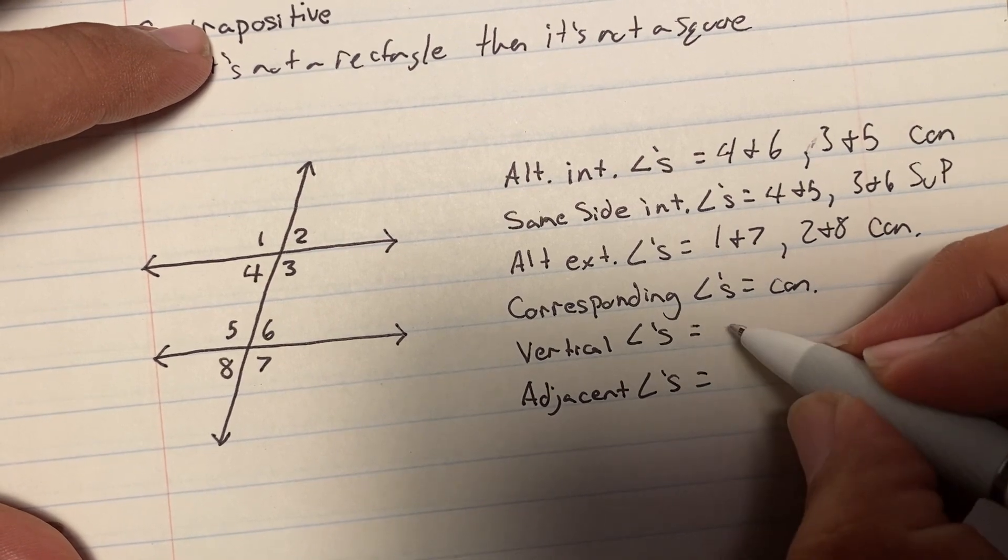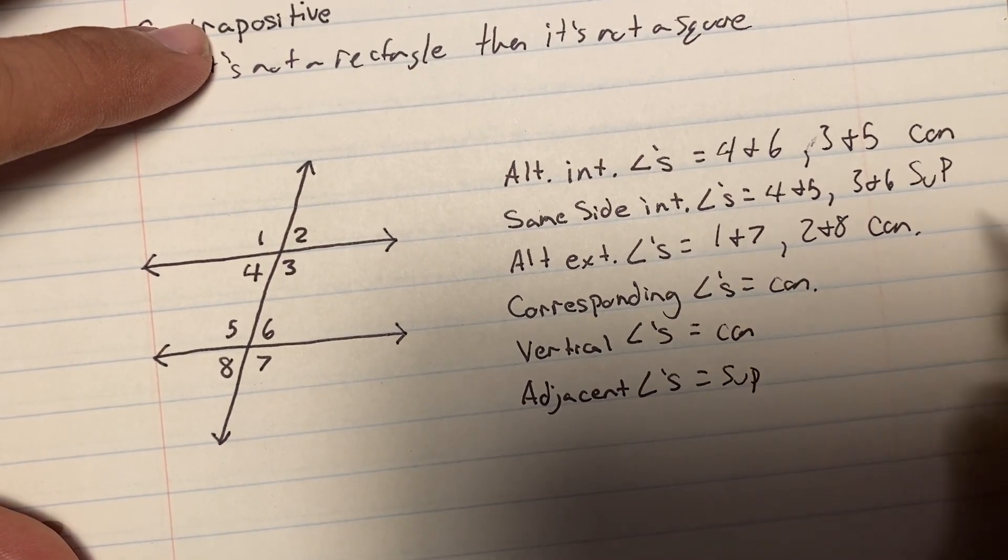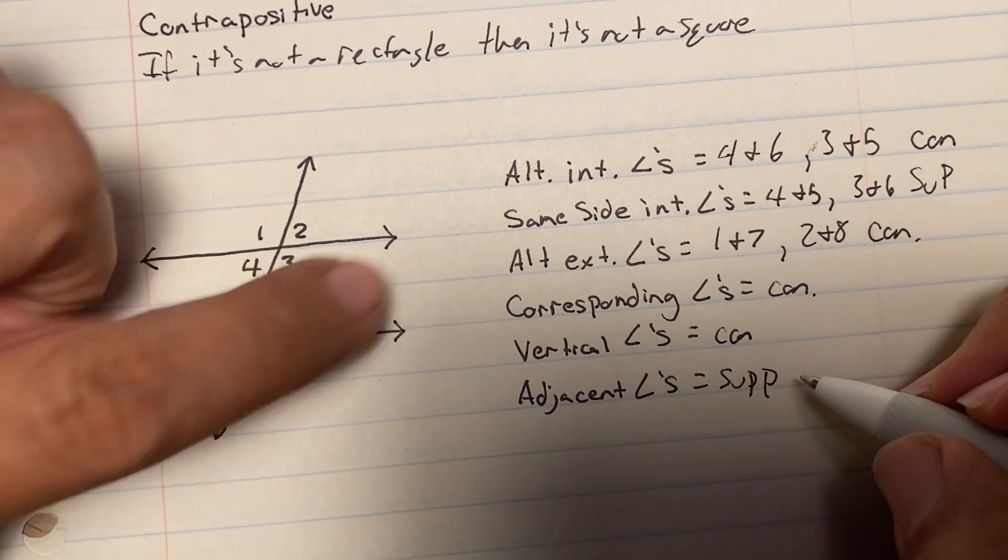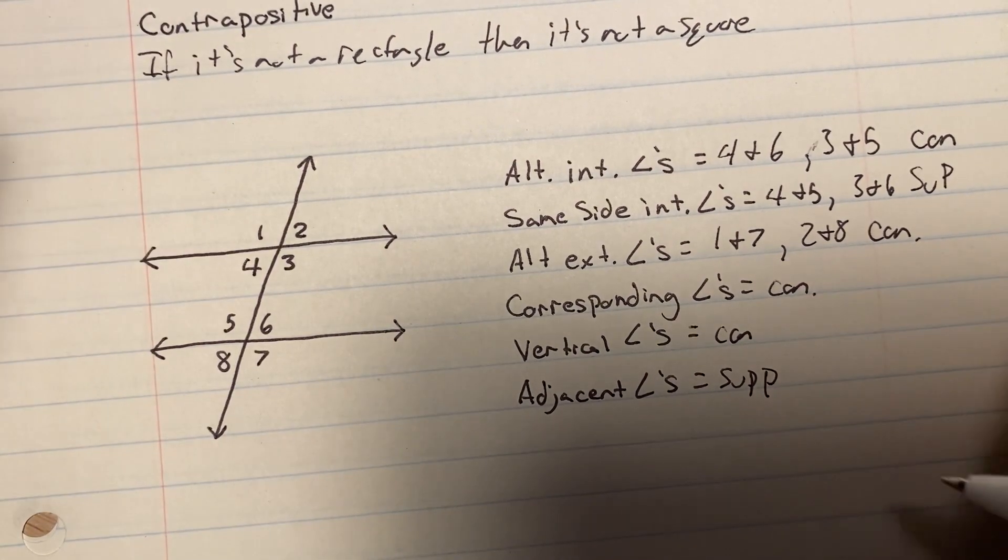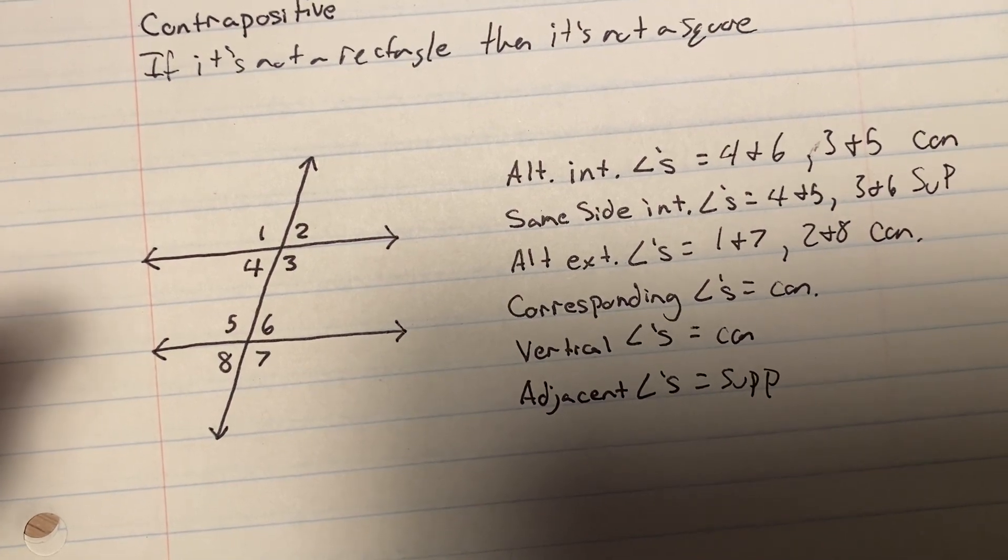And those are supplementary here. So, vertical angles are congruent, and adjacent angles are supplementary. In this form. And that's it. Good luck.